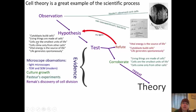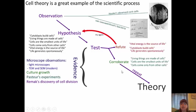Maybe cells come from other cells, or life does generate spontaneously — and then we'll test it. With the test, we come up with evidence: microscopic observations using light microscopes, or in modern days, transmission electron microscopes or scanning electron microscopes. We can culture organisms and look at previous experiments, such as Louis Pasteur's or RIMAC's discovery of cell division. We can corroborate our hypothesis — that living things are made of cells, cells are the smallest units of life, or cells come only from other cells — and then maybe it will become a theory.